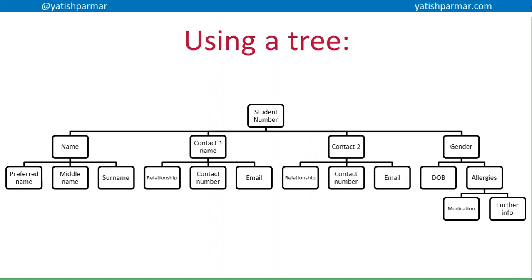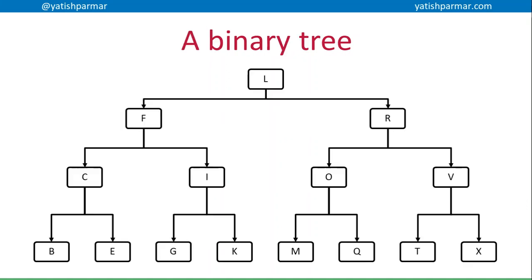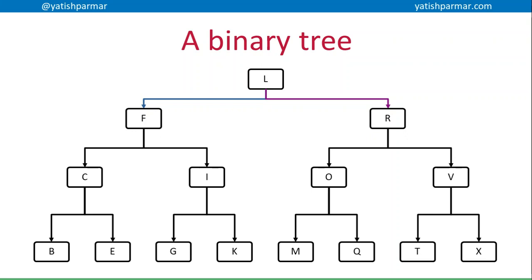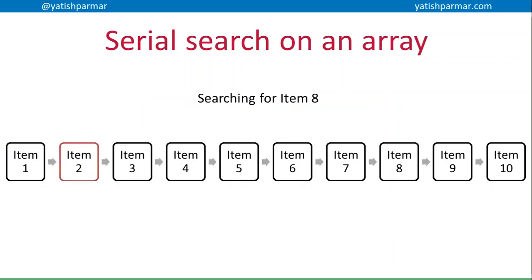How may we be using a tree? You may want to store a bunch of related data for an object. More commonly, a tree is used to store a set of data at each node, but that data is stored in the order of a key. A binary tree has only two pointers from each node, meaning there are no more than two children from every node — left and right.